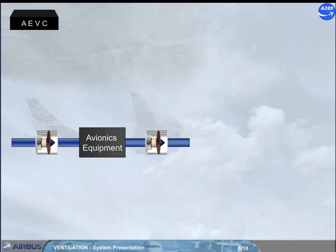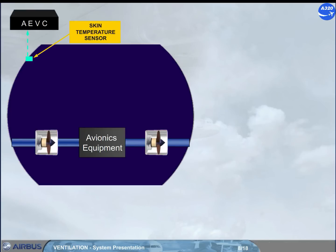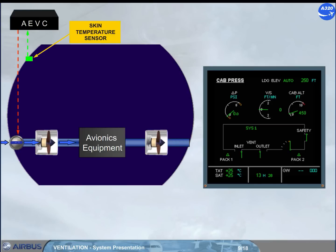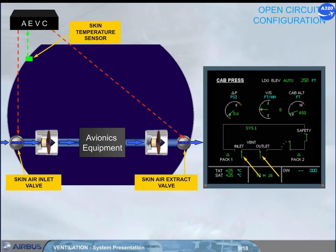On the ground, provided that the skin temperature is above a specified value, air is taken from outside the aircraft via a skin air inlet valve. The air is blown through the avionics equipment, extracted, and then discharged overboard via a skin air extract valve. As both valves are open, this is the open circuit configuration. Note: in most cases, you will see this indication when the aircraft is on the ground and engine not running, or engine thrust not at takeoff.